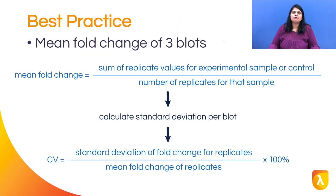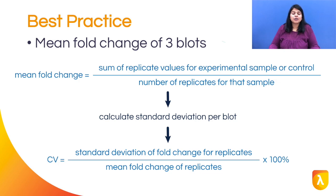Calculate the mean fold change and standard deviations of at least three blots. The coefficient of variance, or CV, provides information about how variable your data are across the sample population. This value will reflect the accuracy of your findings.